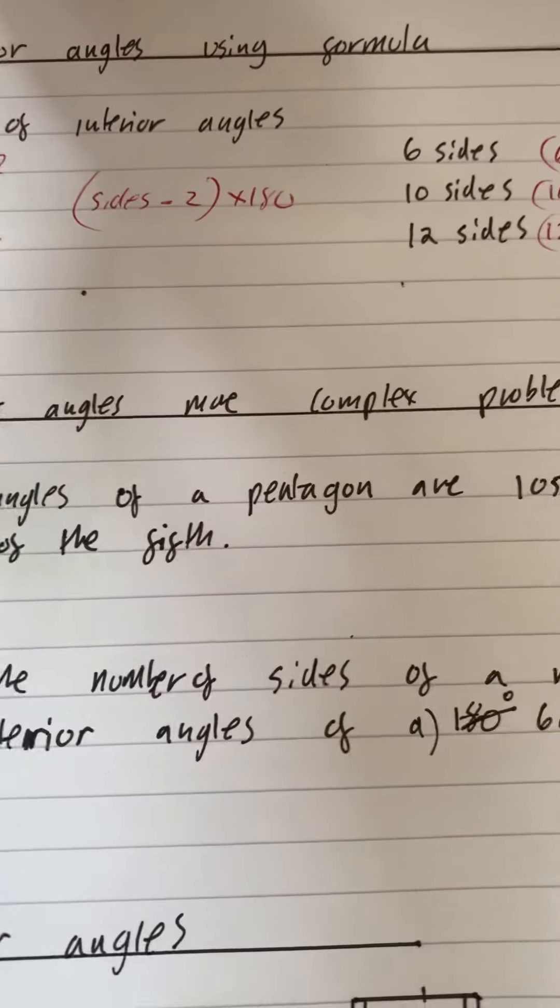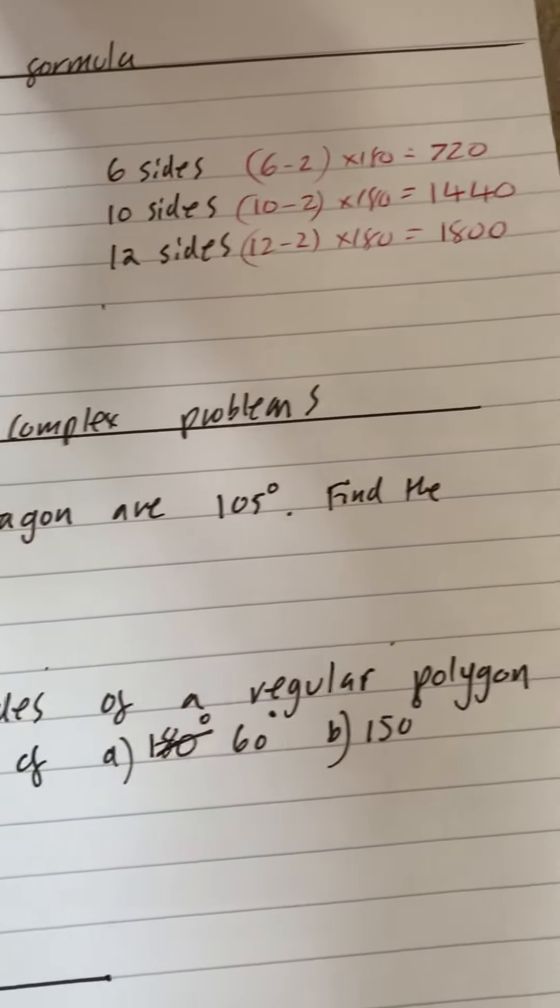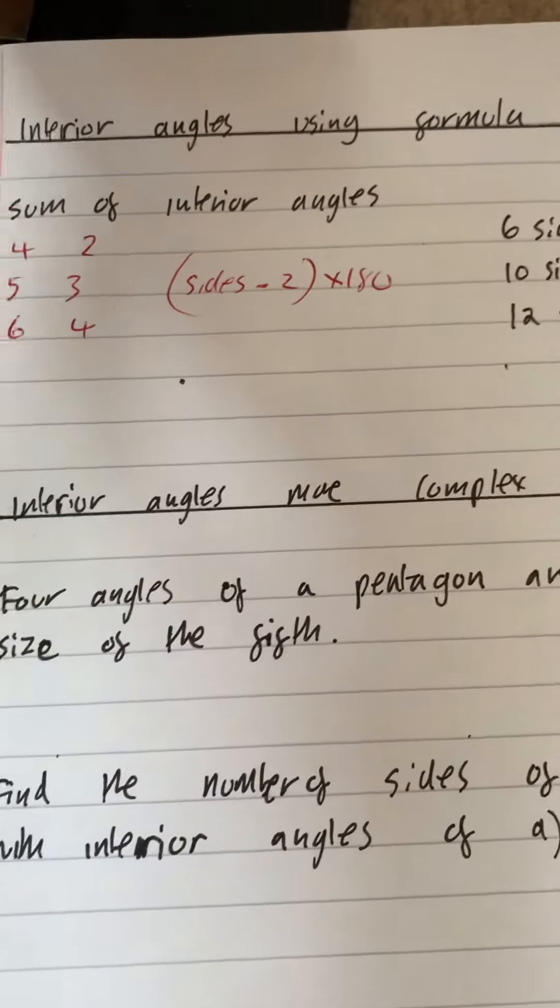Okay, it says four angles of a pentagon are 105 degrees. Find the size of the fifth.